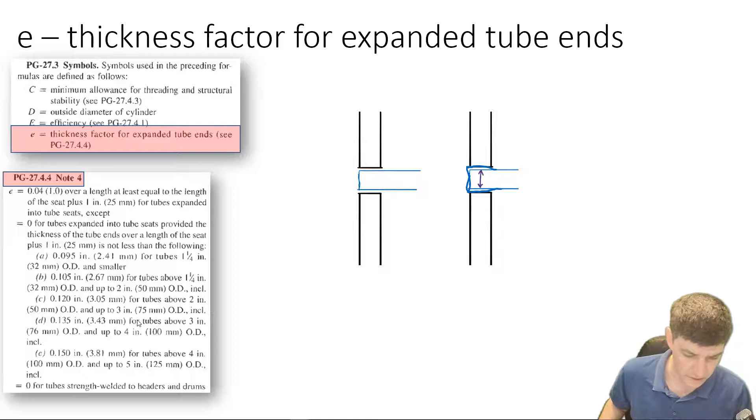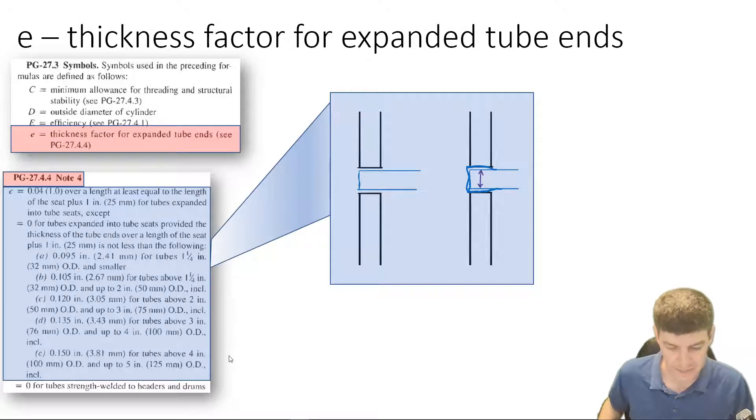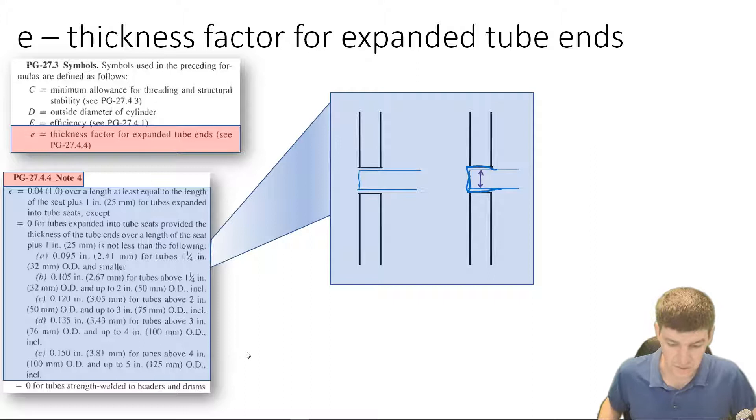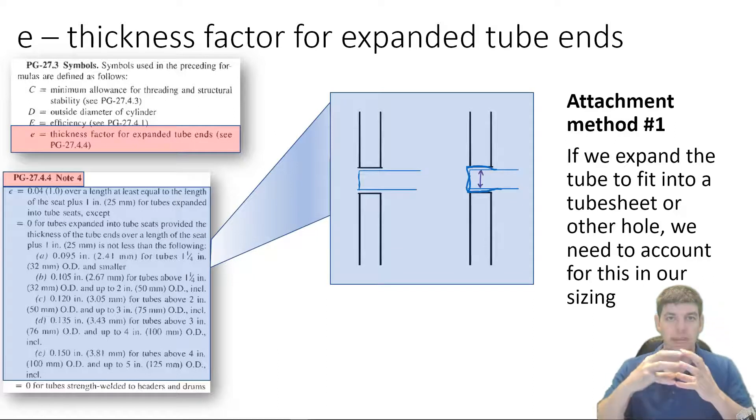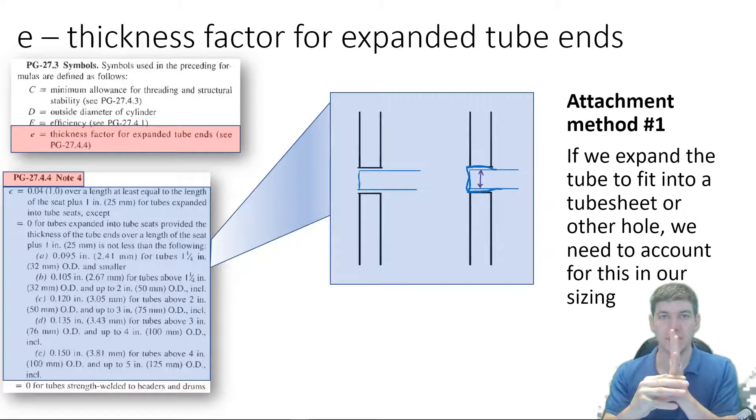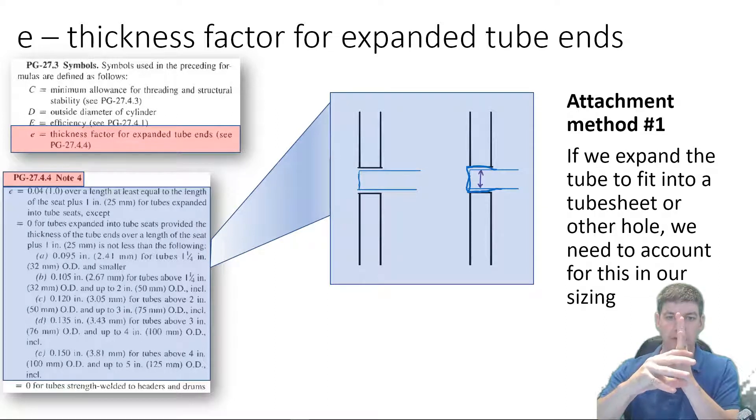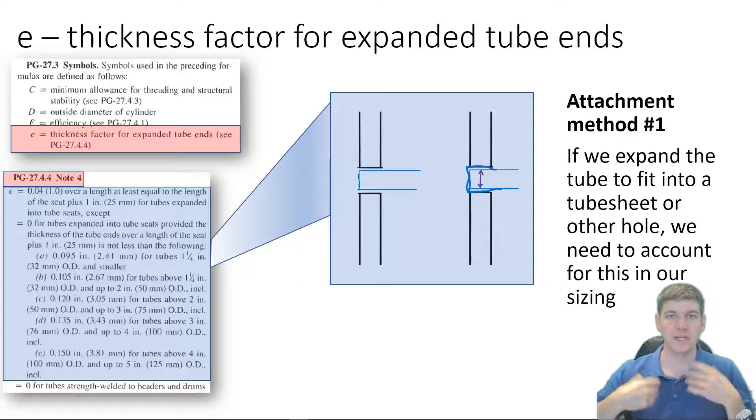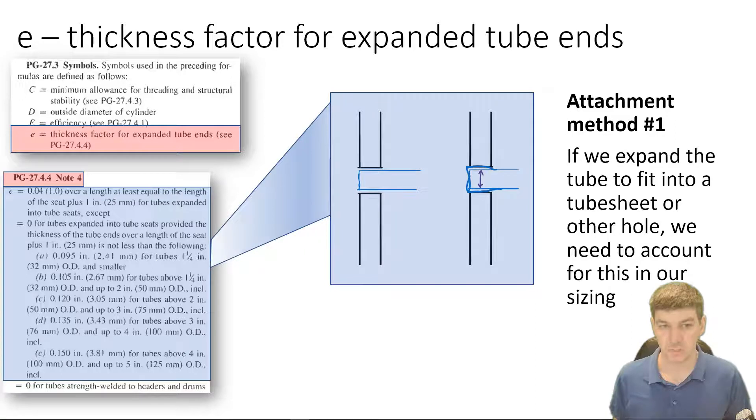Here's what this is talking about. I got a little diagram there. So, the first, I don't know, the top 90% of this is talking about one attachment method. So, if we expand a tube into a hole. So, we have, say, a tube sheet, and we stick our tube in, and then in order for it to be attached, we expand it out. So, it is tight within that hole. Well, when we expanded it, we've changed the structure of that tube. And so, this statement talks about what do we need to do if we've expanded that tube. We're probably going to have to add extra thickness to the tube to account for the weakening that we've just done by expanding it.